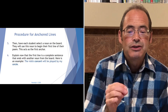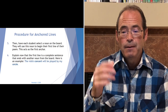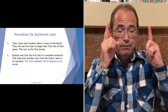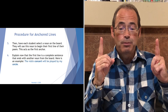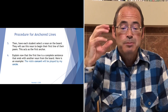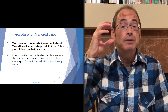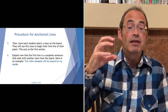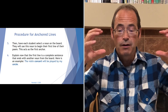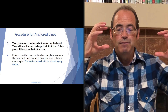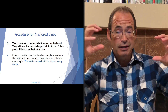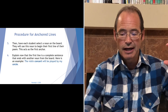Then have each student select a noun on the board — they will use this noun to begin the first line of their poem, which acts as the first anchor. Explain how the first line is a complete sentence that ends with another noun from the board. Here's an example: 'The violin concert will be played by my uncle.' So 'violin concert' is the first anchor and 'uncle' is the last.